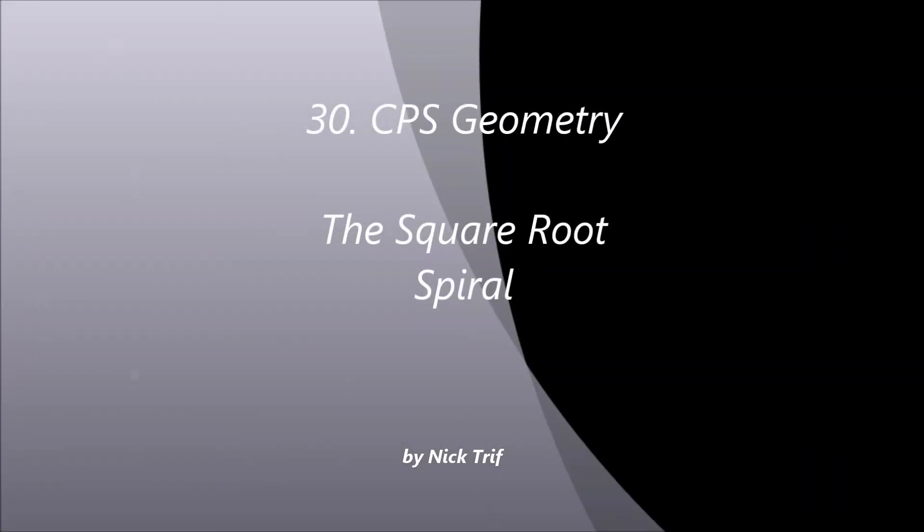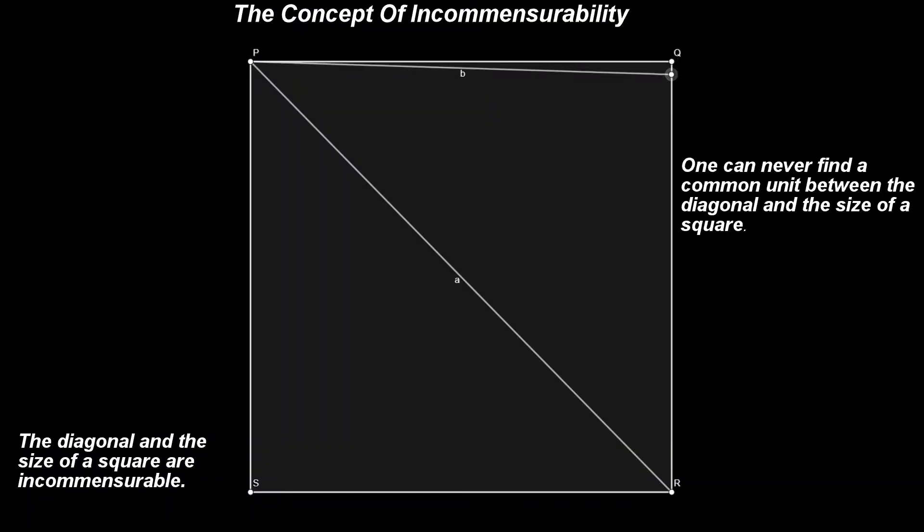30. CPS Geometry. The Square Root Spiral. As we have seen in the previous video, the diagonal and the size of a square are incommensurables with each other.